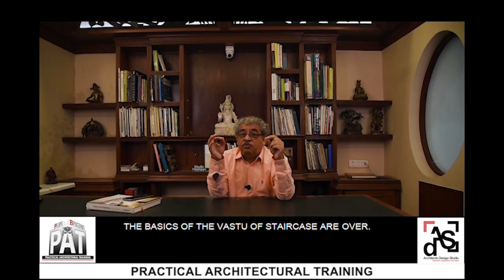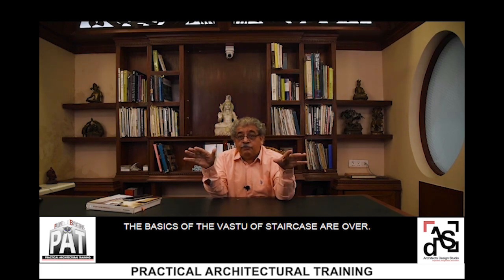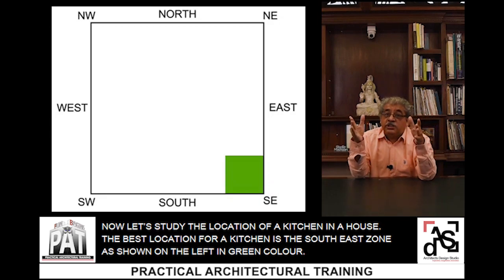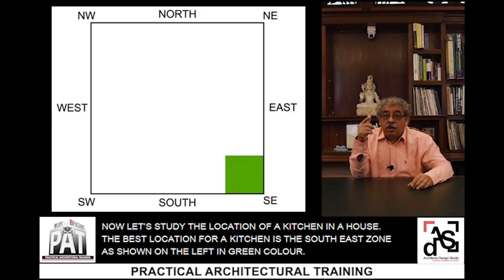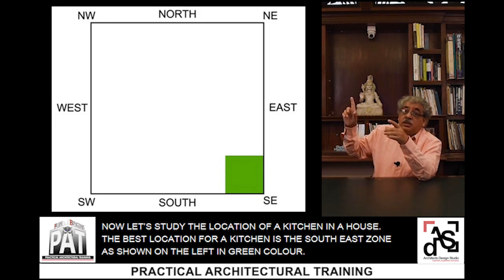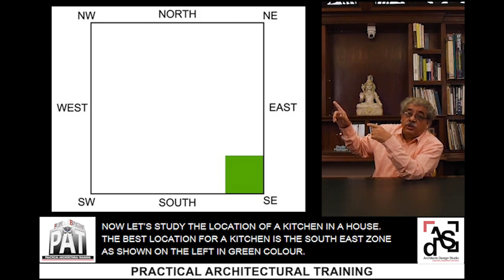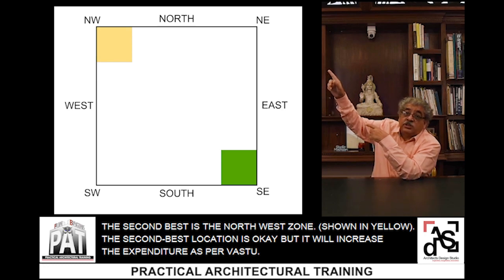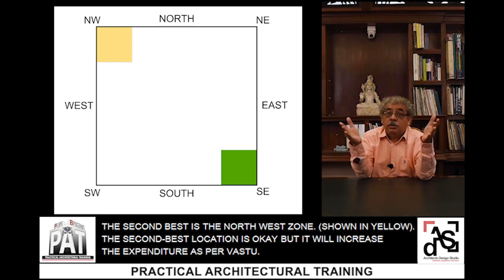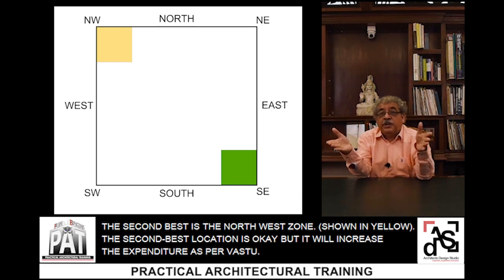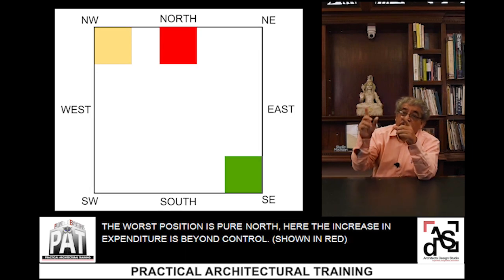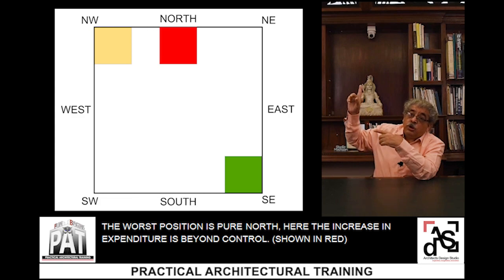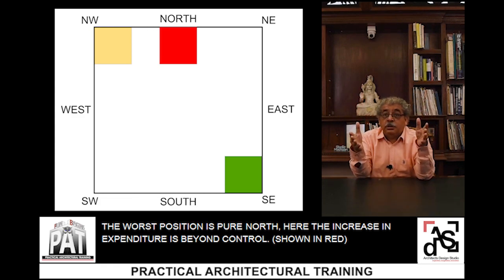The basics of the Vastu of staircase are over. Now let us study the location of the kitchen in a house. The best location for a kitchen is the south-east zone, as shown on the left in green. The second best is the north-west zone — this is okay but will increase the expenditure of the house as per Vastu. The worst position is the pure north, where the increase in expenditure is supposed to go beyond control.